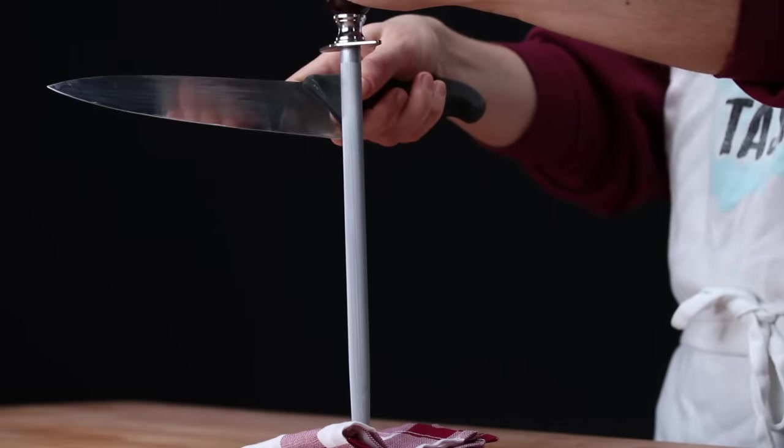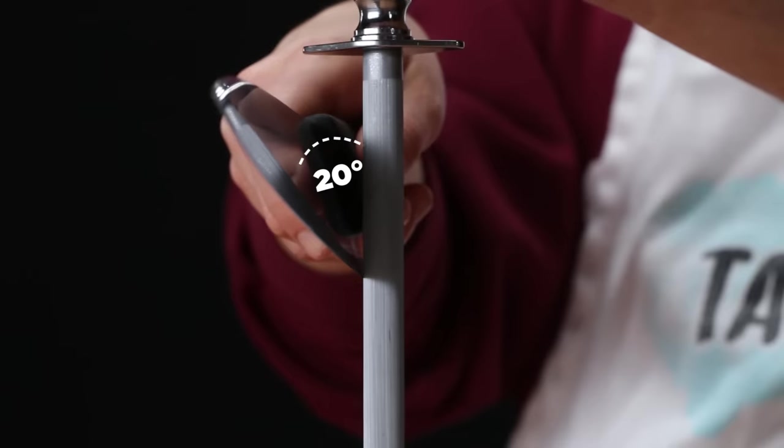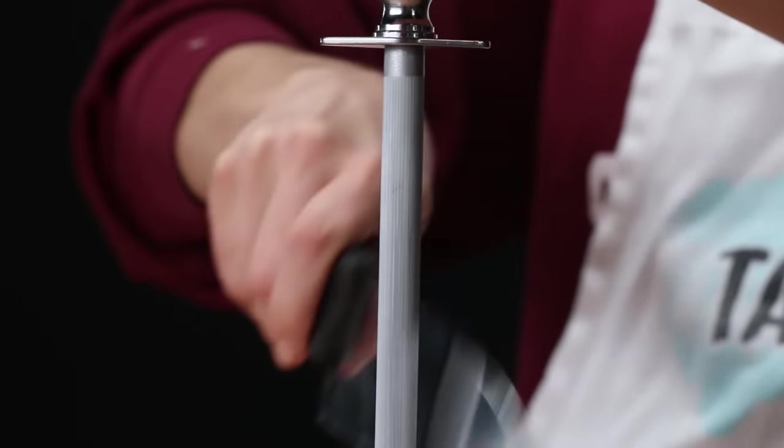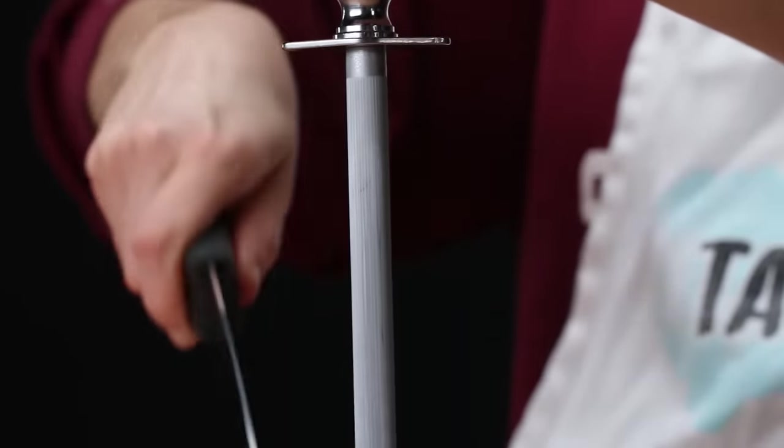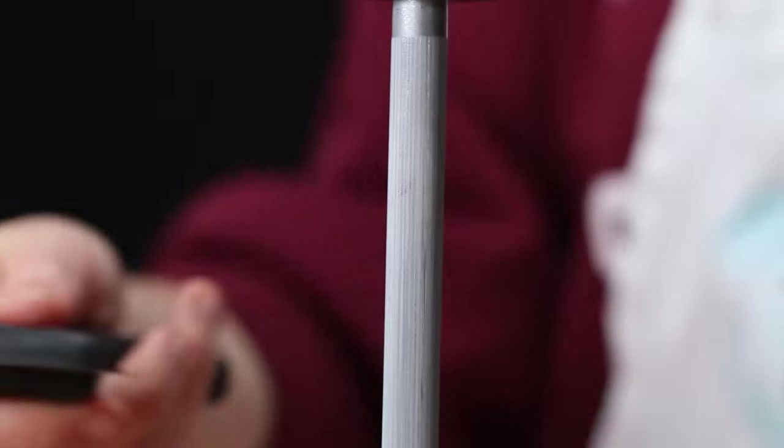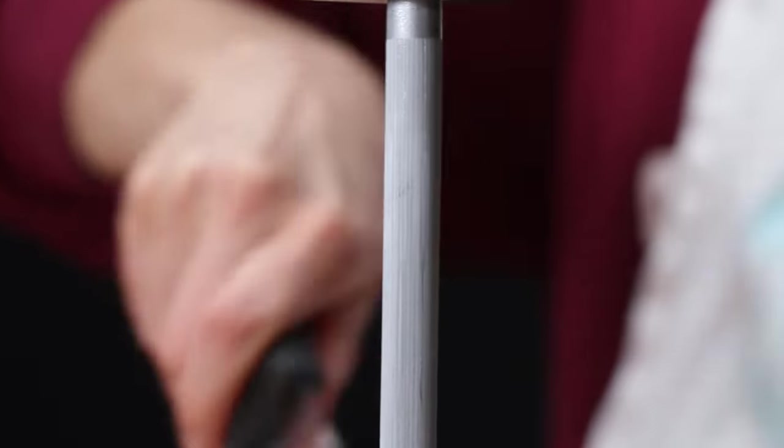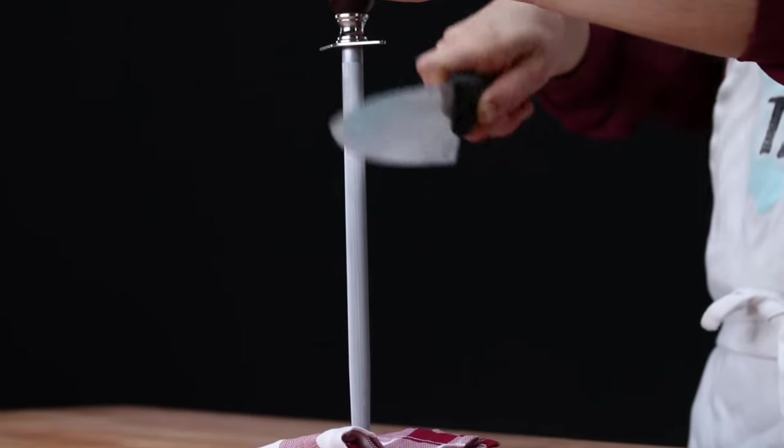So whether you're honing or sharpening we're always looking for roughly a 20 degree angle, and that can be a little bit difficult to imagine. So it's easier for the eye to work in halves. You can start at 90, cut that in half to 45, cut that in half again, and that's going to be at 22.5, which is roughly where you want to be.